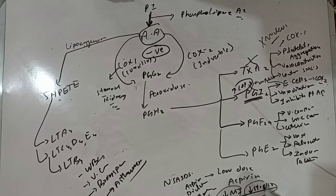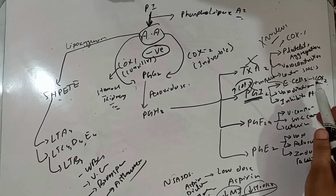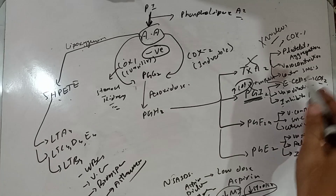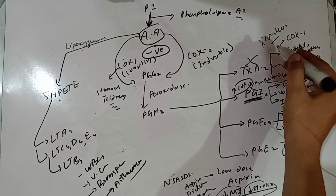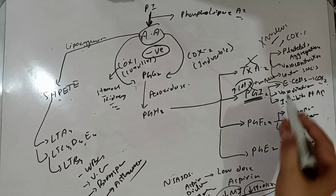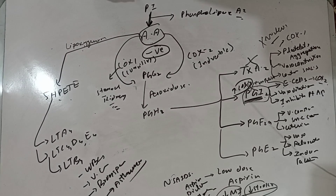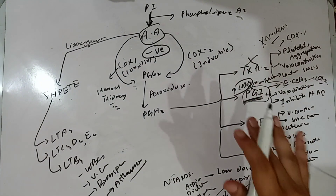So aspirin prevents MI and stroke. In platelets, COX-1 leads to thromboxane A2 synthesis and platelet aggregation. Aspirin inhibits both COX-1 and COX-2: platelet aggregation via thromboxane A2 remains inhibited because platelets don't have a nucleus and cannot synthesize new enzyme. However, endothelial cells have a nucleus, upregulate COX-2, and PGI2 synthesis continues, so platelet function is inhibited and aspirin reduces the risk of MI and stroke.